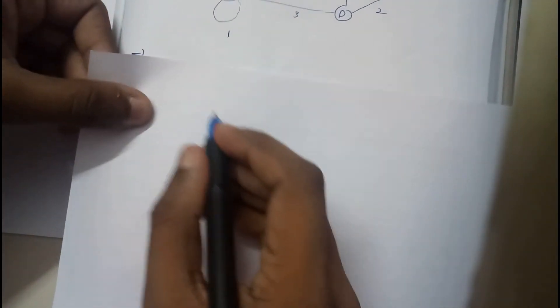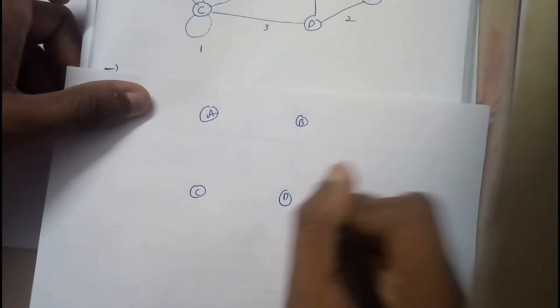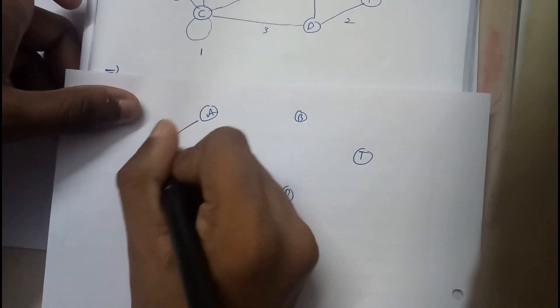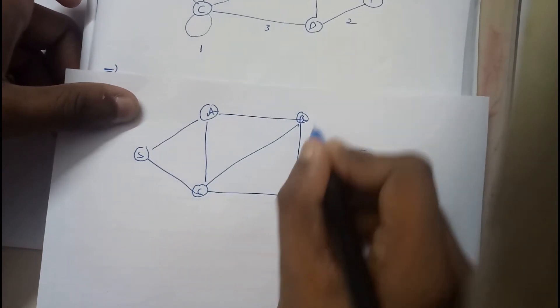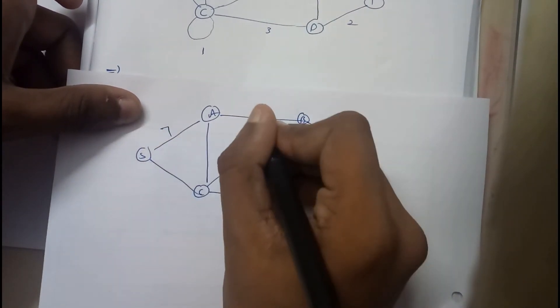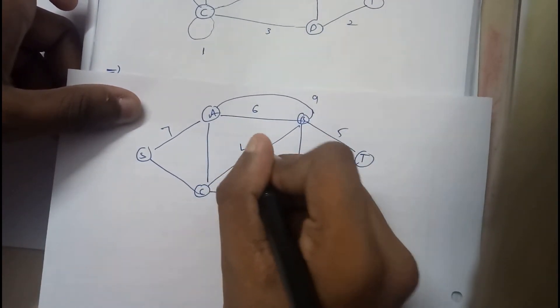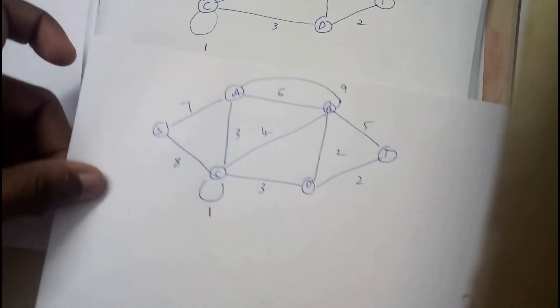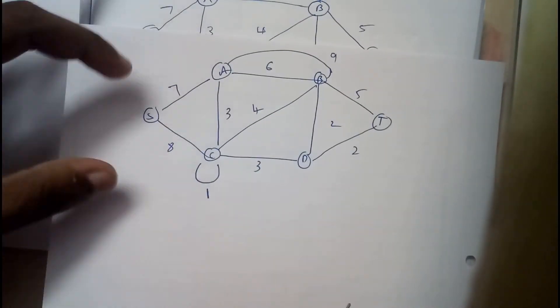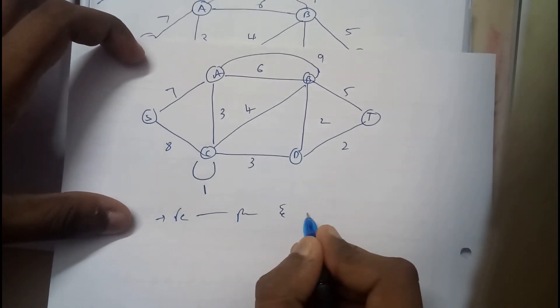Further on, you will be inserting one after the other edges from least value to the maximum value, one after the other, such that no circuits or cycles are formed. This is going to be the easiest way. Let us take an example. I'll be drawing the circuit which is here. This is an example problem from our previous exam paper.